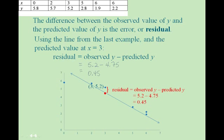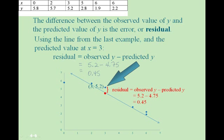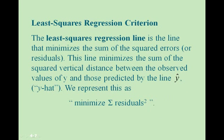Here we see a good visual of this. You'll see that we've taken the point on the line at x equals 3, which is what we got from our equation, and the actual data point from the table slightly above it. That distance between the two is the residual. The residual always goes vertically up and down, not horizontally. The least squares regression line is the line that minimizes the sum of the squared errors or residuals, minimizing the sum of the squared vertical distances between the observed values of y and those predicted by the line y-hat.